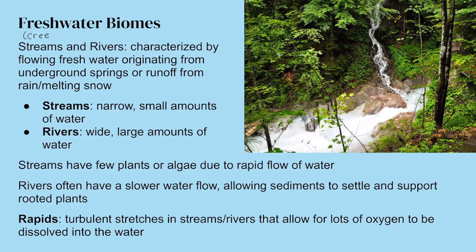Freshwater biomes consist of either streams or rivers. Streams are also referred to as creeks — those are synonymous in environmental science. These are characterized by flowing freshwater that originates from an underground spring or is runoff from rain or melting snow. Streams are narrow with generally small amounts of water; rivers are much wider with large amounts. There's no strict cutoff between the two. Streams generally have few plants because water flows fairly rapidly, whereas rivers have slower flow, allowing sediments to settle and support rooted plants.